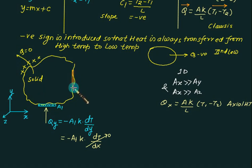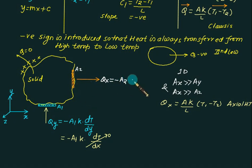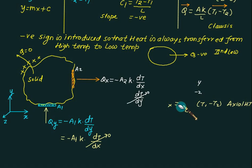Now let heat enter from one side, with the rest of the surface insulated, and heat allowed to leave from area A2 which is perpendicular to the x direction. You have to write q_x because it must be perpendicular to that area. Since you are writing q_x, you must write q_x = -A2 × k × dT/dx. You cannot write dT/dy — this is not permitted. If going in the x direction, write dT/dx; if going in the y direction, write dT/dy.